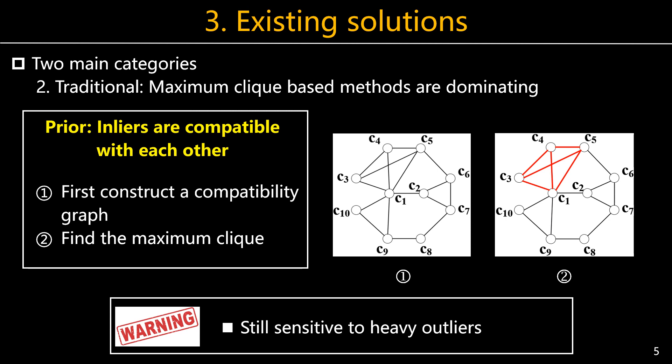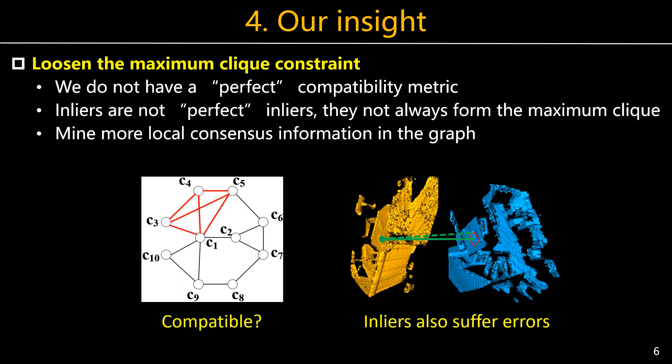For traditional geometric methods, the Maximal Clique-based methods are very popular. These methods assume that inliers are compatible with each other, so inliers will form the Maximal Clique in the compatibility graph constructed for input correspondences. However, these methods are still proven to have outliers. We realize that we do not have a perfect compatibility metric to ensure only inliers are connected, and inliers also suffer from matching errors which cannot guarantee only inliers are connected. This explains why Maximal Clique-based methods show limited performance.